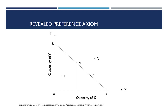If Mr. P chooses basket A over basket B, which is on the same budget line, then it can be inferred that Mr. P prefers basket A over basket B. Since basket B is on the same budget line, basket B is as expensive as basket A, which means Mr. P has revealed his preference for A over basket B. Basket A is the optimal bundle for the consumer at the given budget, and must be superior to the other bundles on or below the line RS.